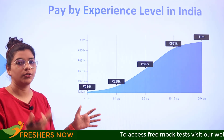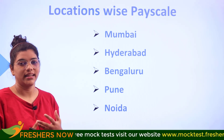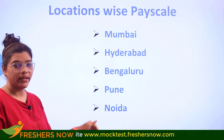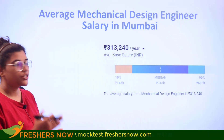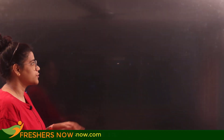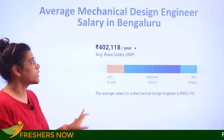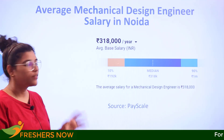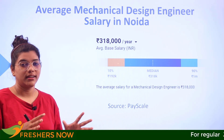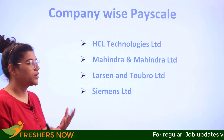Looking at major locations in India: in Mumbai the average salary is 3 lakhs 13,000 per annum; Hyderabad is 3 lakhs 39,000; Bengaluru is 4 lakhs per annum; Pune is 3 lakhs 97,000; and Noida is 3 lakhs 18,000 per annum.